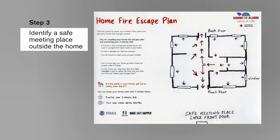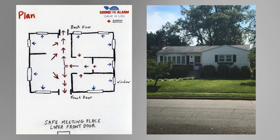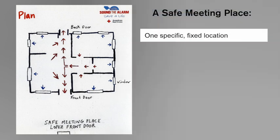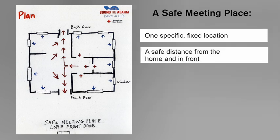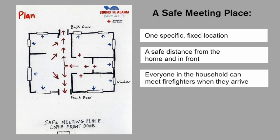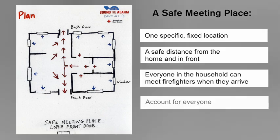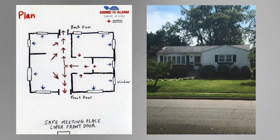Now that we have identified the first and second escape paths from each room in your home, and we have ensured that the ways out are always free of obstructions including furniture and equipment, and that windows and doors open easily, it's time to move on to identifying a safe meeting place where everyone in your household can meet in the event of a home fire. A home fire is confusing — everyone in the household may escape via a different route. A safe meeting place should be in one fixed location at a safe distance from the home and in the front. What would be a good safe meeting place for you and your family? Let's go ahead and record your safe meeting place in your home fire escape plan.